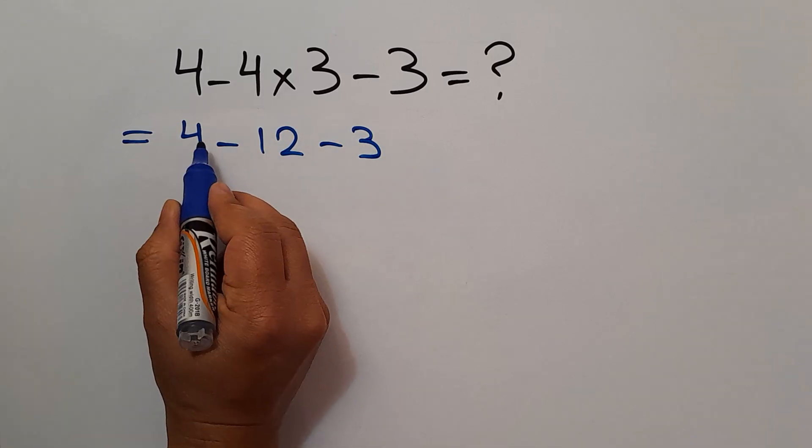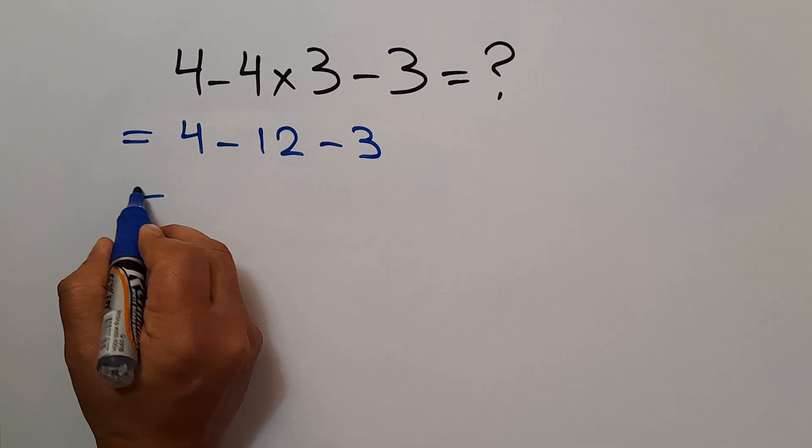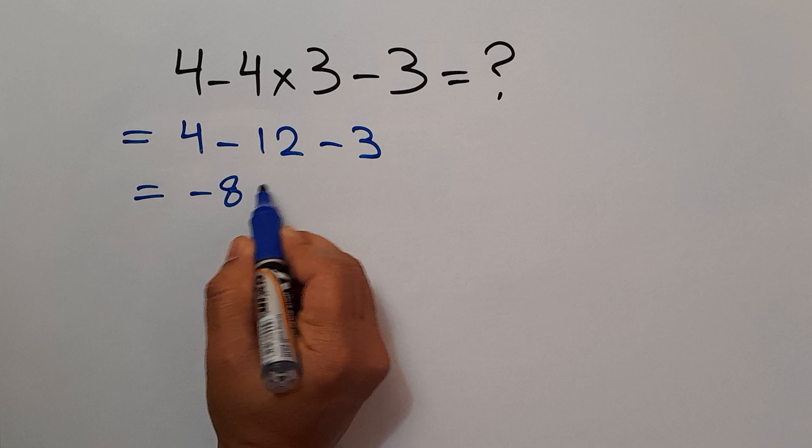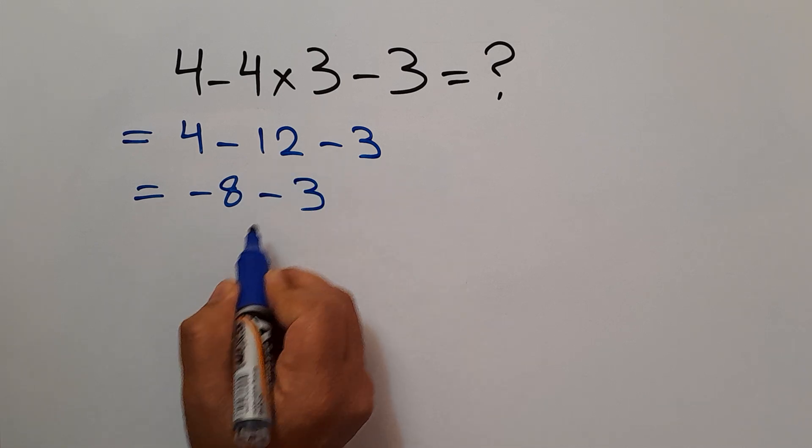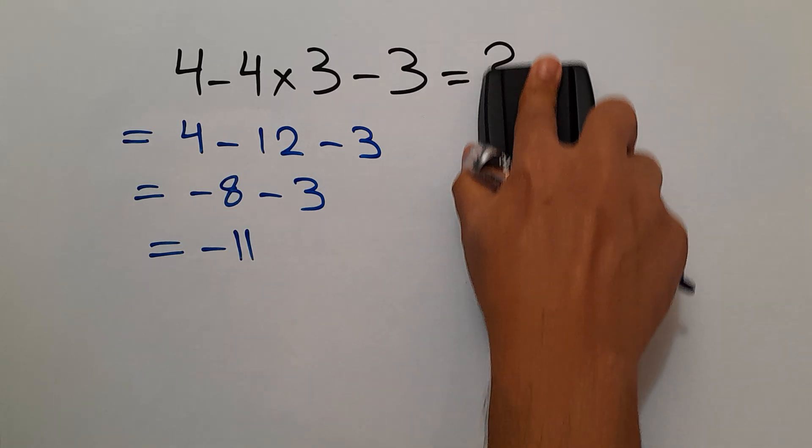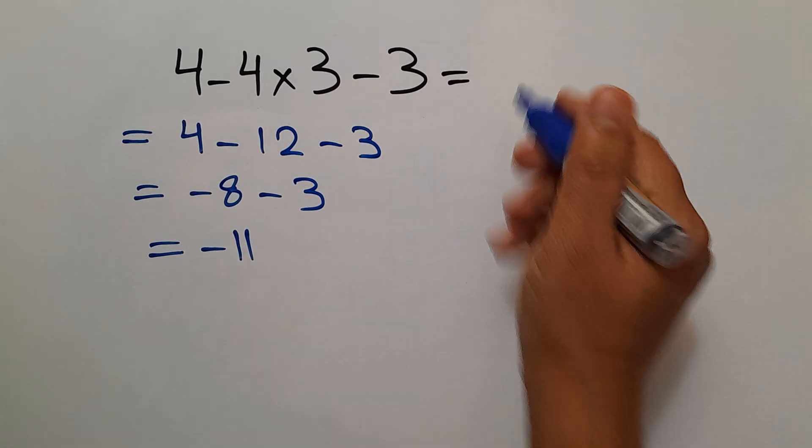And here 4 minus 12 gives us negative 8 and negative 8 minus 3 which equals negative 11. So our final answer to this problem is just negative 11.